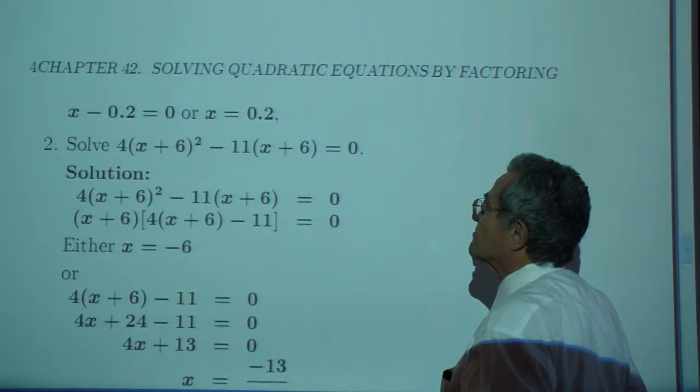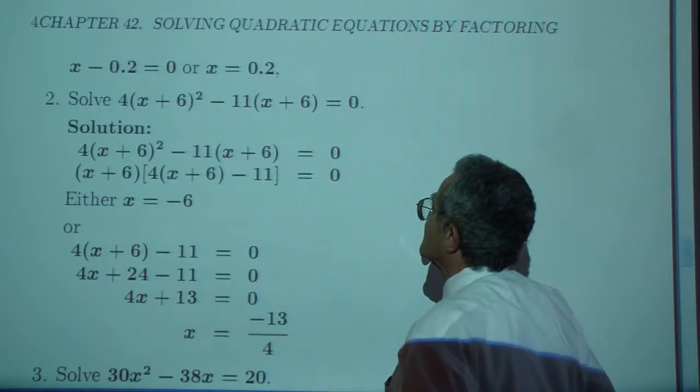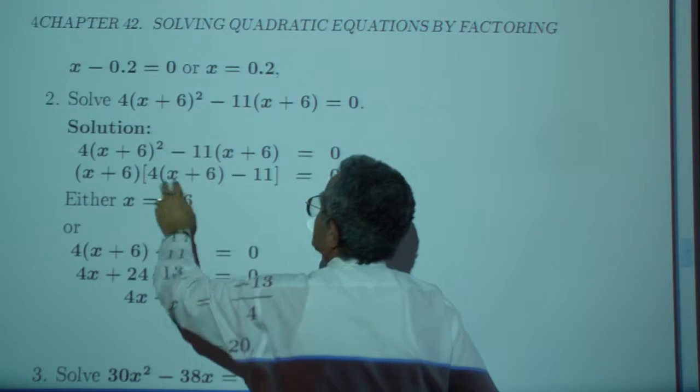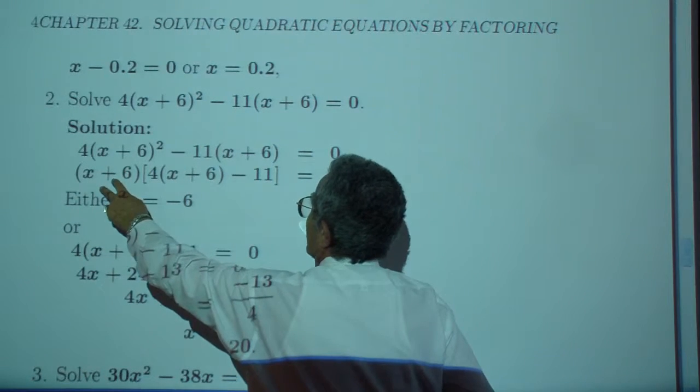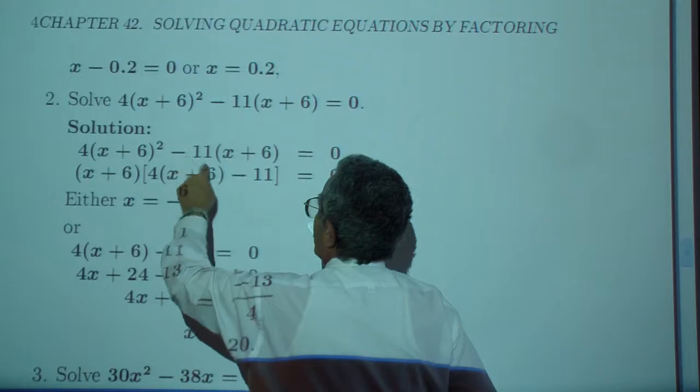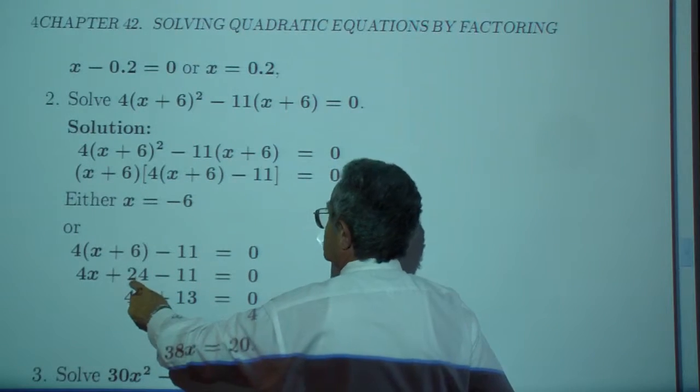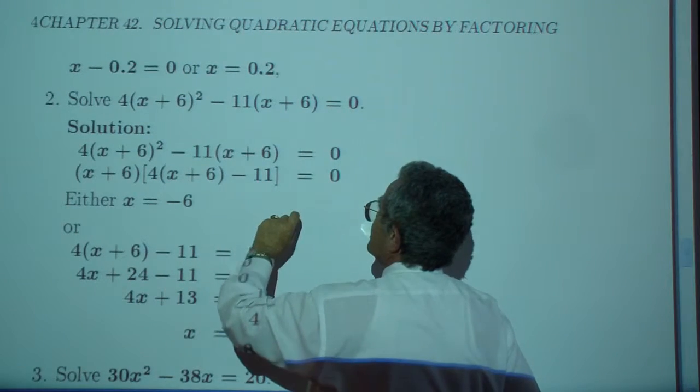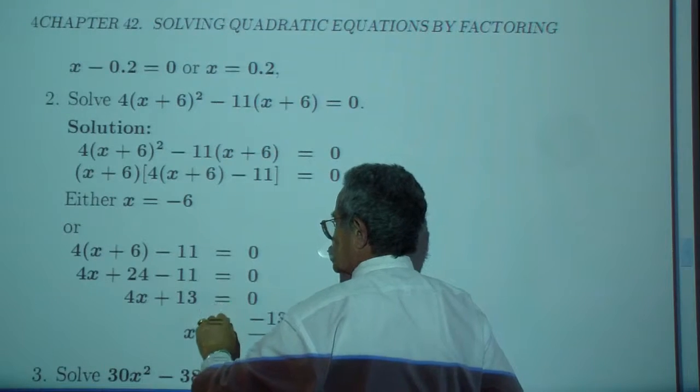Exercise two. You want to factor out the X plus six, that's the greatest common factor. You're left with 4X plus 24 right here, minus 11, and the X plus six is factored out.